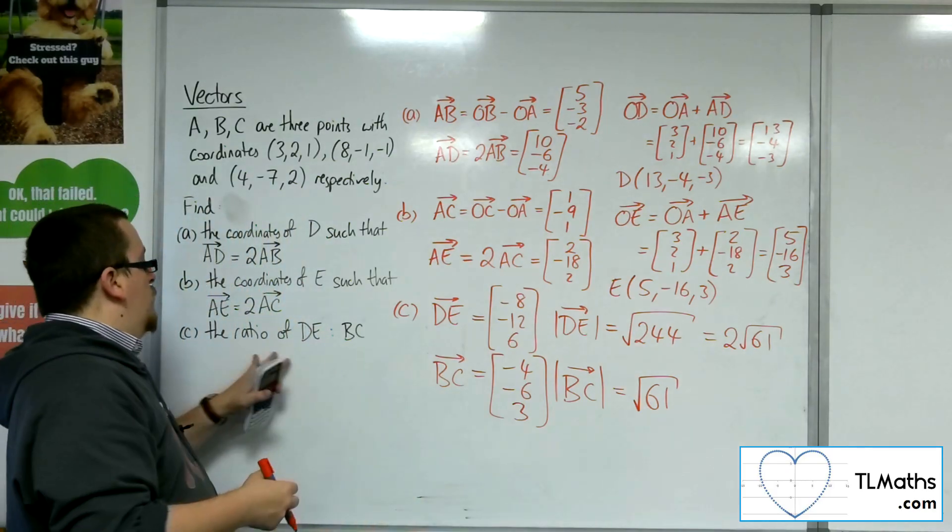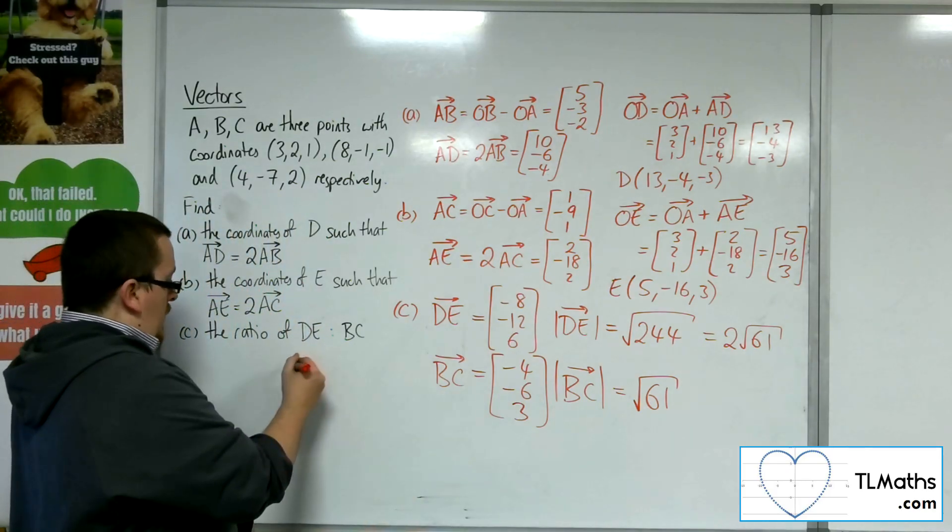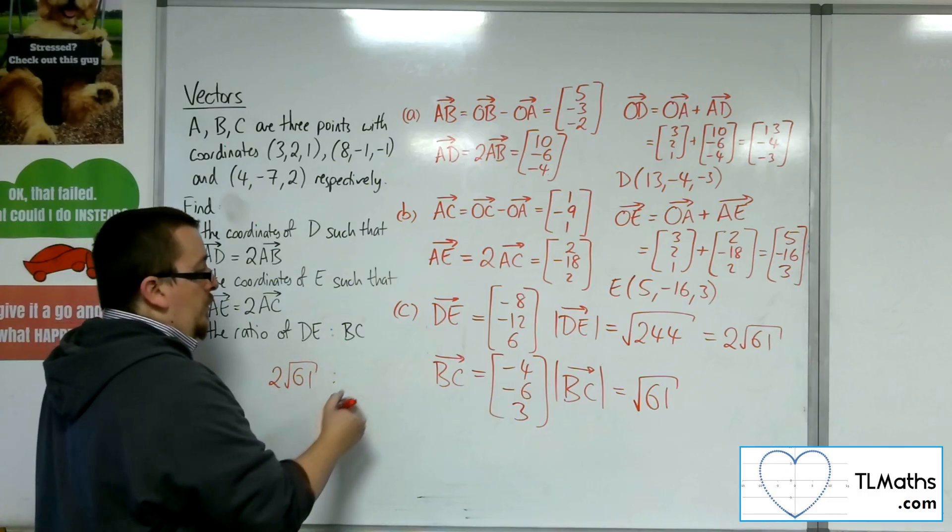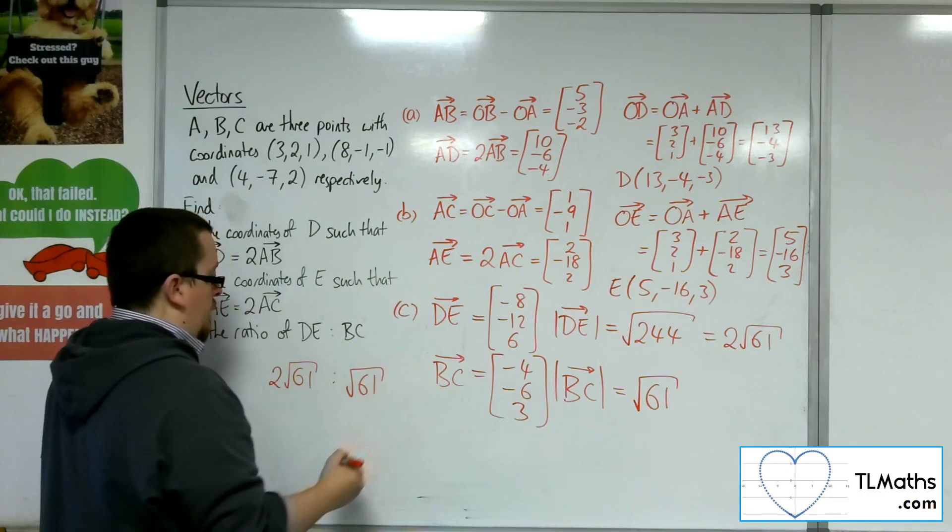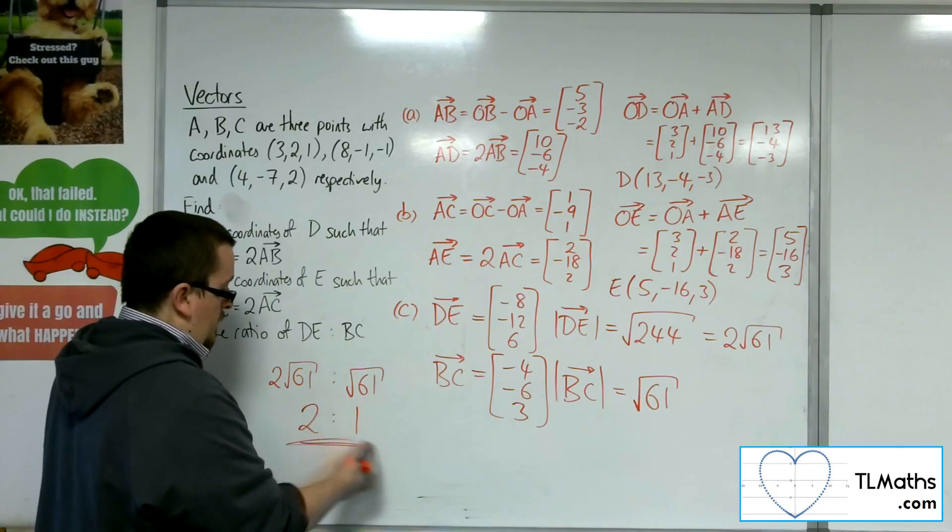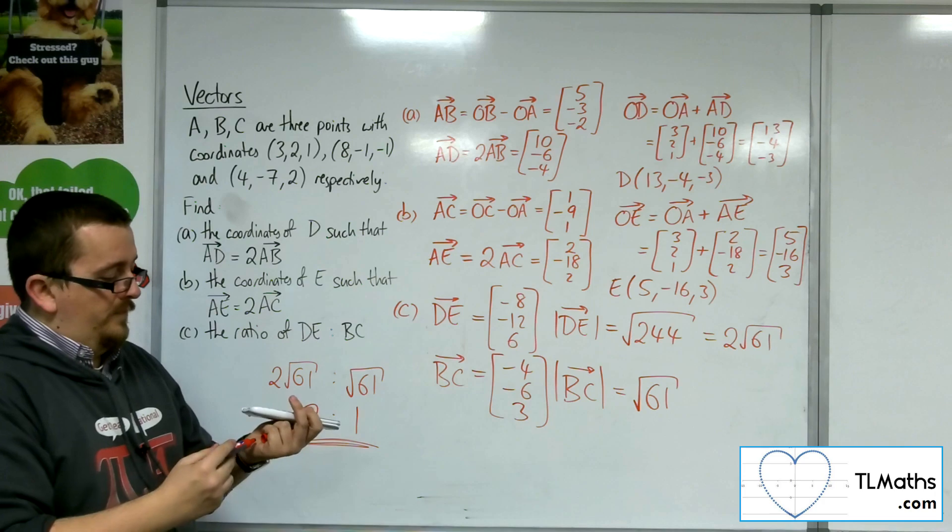So the ratio of DE to BC is 2 root 61 to root 61. And so dividing both sides by root 61, simplified, is 2 to 1.